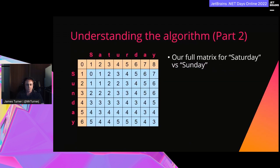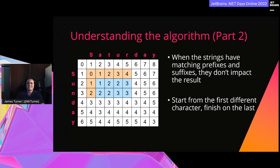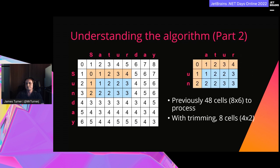Looking at our full matrix of Saturday versus Sunday, there's something interesting — it actually contains a smaller matrix with the same Levenshtein distance in fewer cells. Common prefixes and suffixes don't impact the result. We can start calculating from the first different character and finish on the last — effectively trimming our strings of matching characters. In this example, after trimming, we'd only need to process 8 cells, not 48.